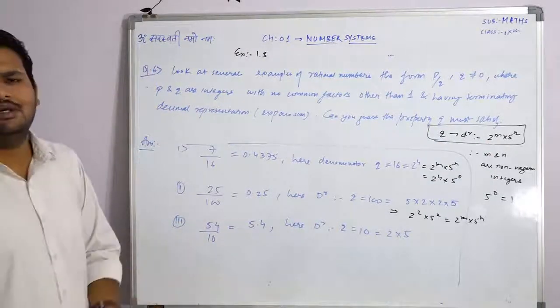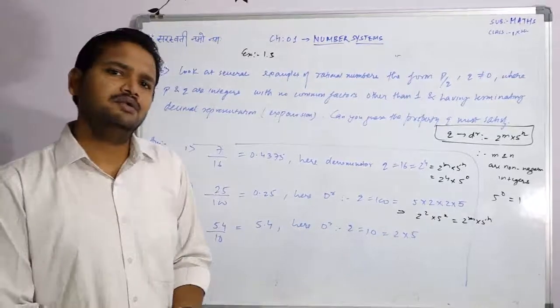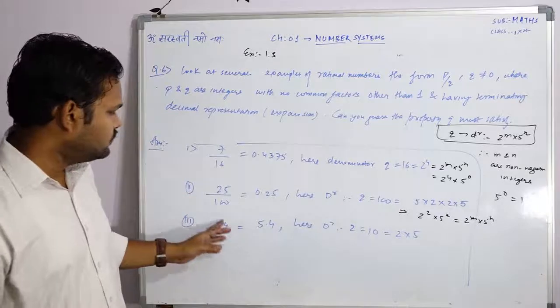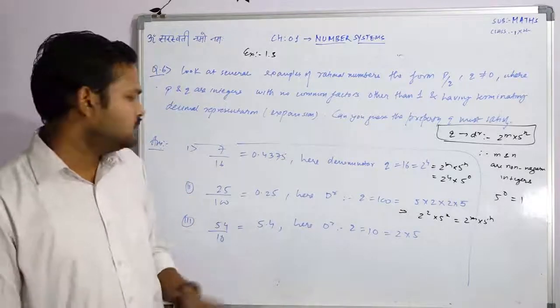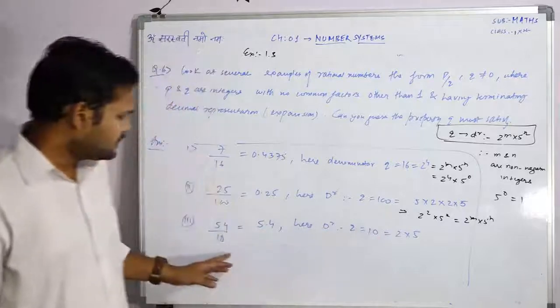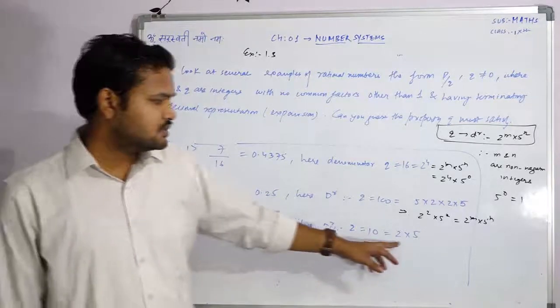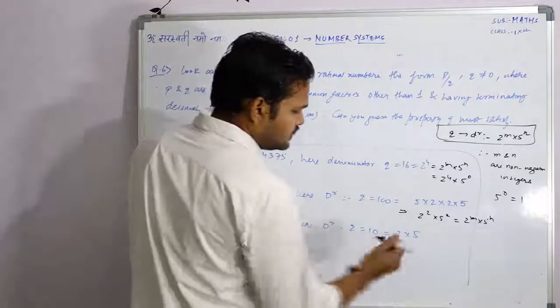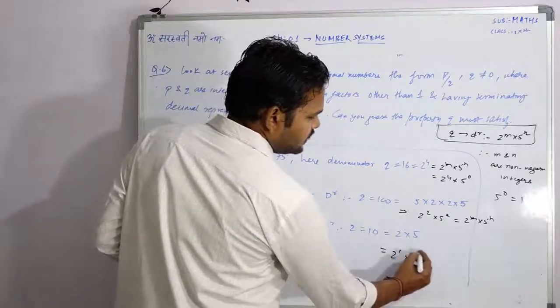As such, 54 by 10, 53 by 10, 25 by 10, you can suppose any number. So 54 by 10 is 5.4. Here, what is q? 10. What is the denominator? 10. How can we express this? 2 into 5. That means, 2 raised to 1 into 5 raised to 1.